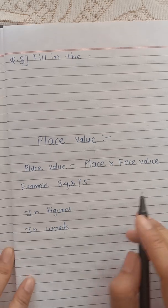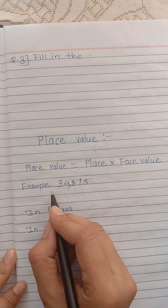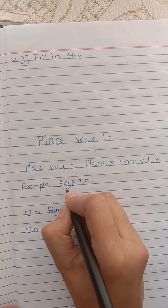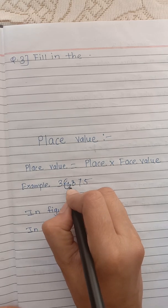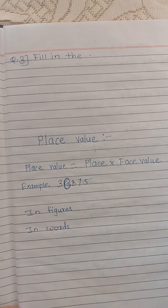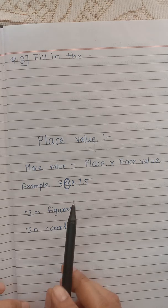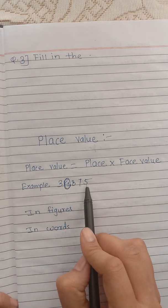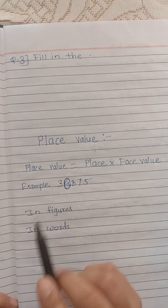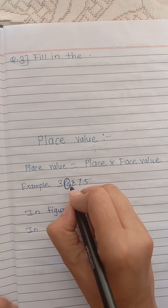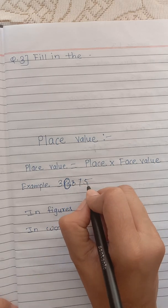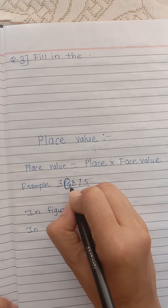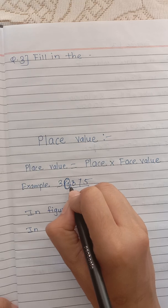In this example, we want to find the place value of the digit 4. This is a 5-digit number. So we divide this number into 2 periods — the last 3 digits will be the ones period and the other 2 digits will be the thousands period.